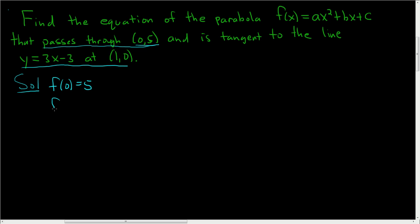We're also told it's tangent to this line at (1, 0). That means f(1) = 0 because it passes through (1, 0), and it also means that f'(1) = 3 because the derivative at 1 is the slope of the tangent line, which is 3.